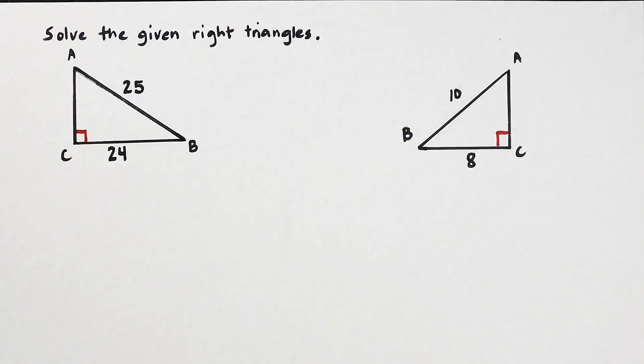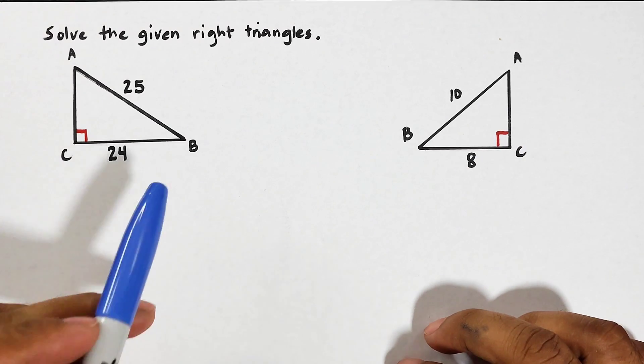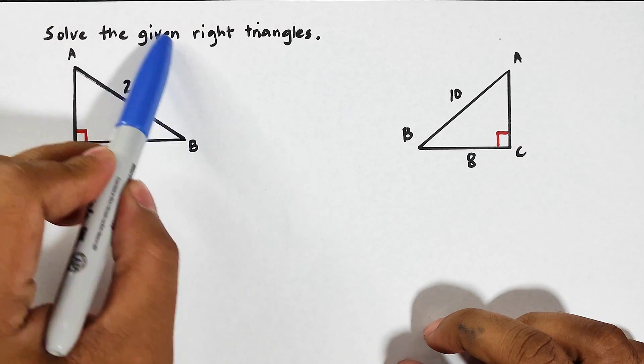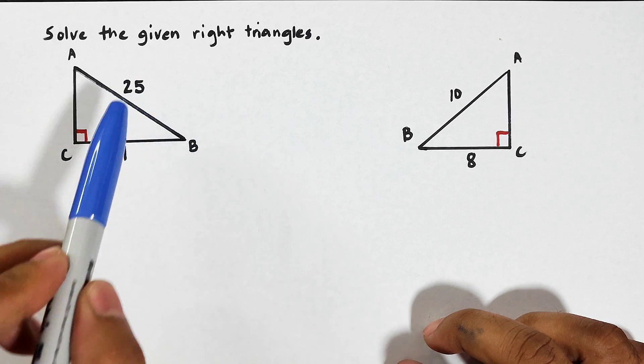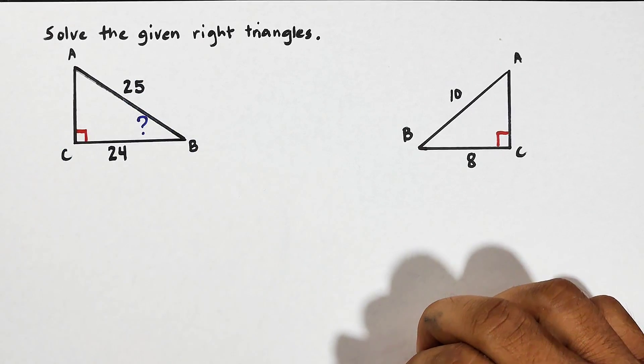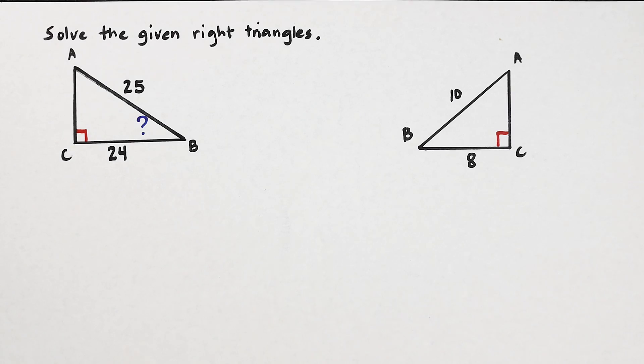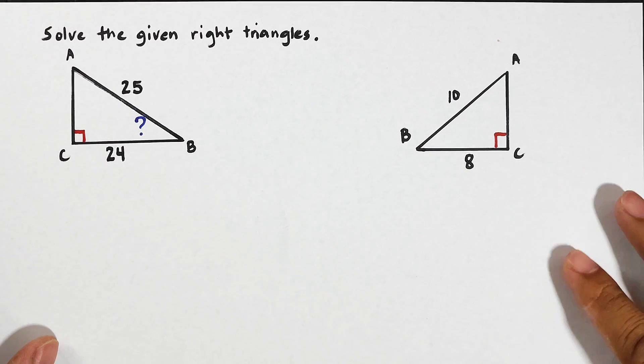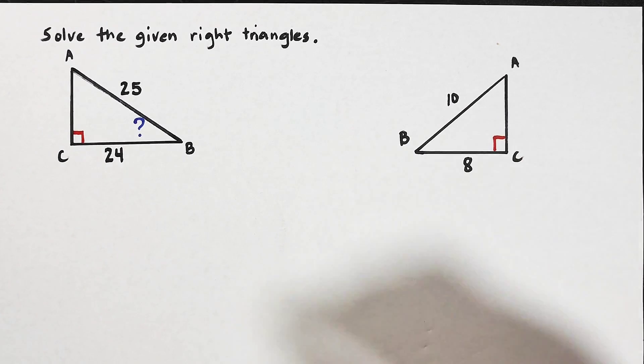So what we have here are two right triangles, but in this tutorial video the focus is to solve for this angle. But I want to maximize this tutorial video in which we need to find all the missing parts that this right triangle has.